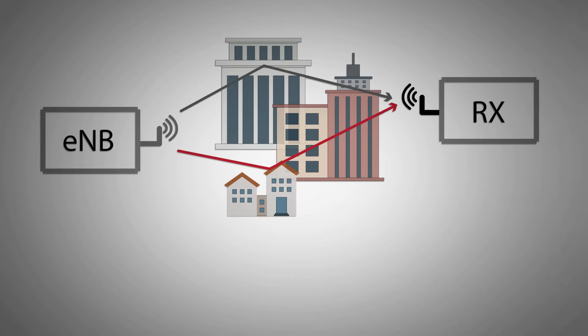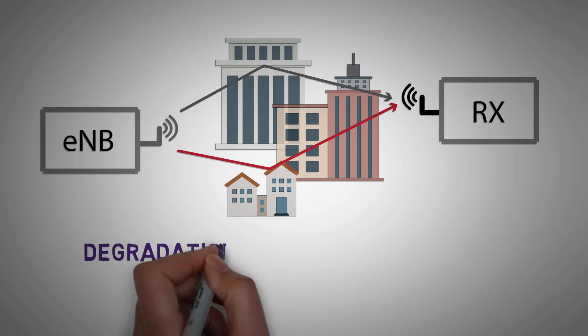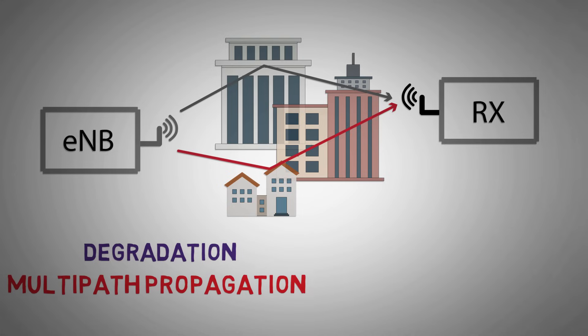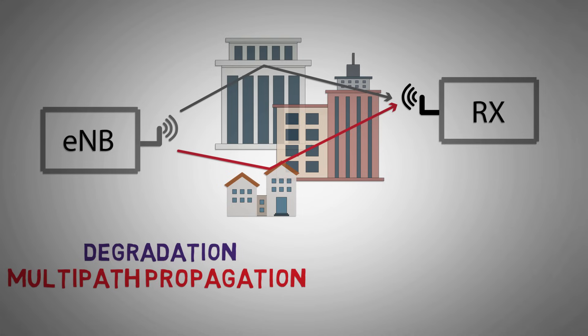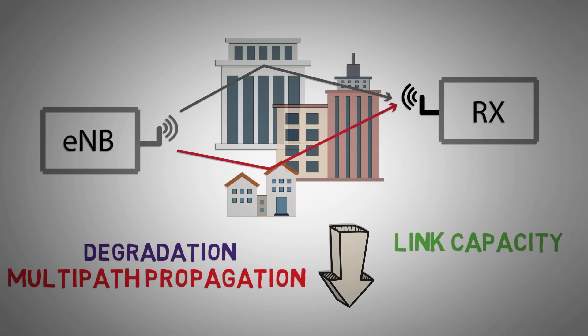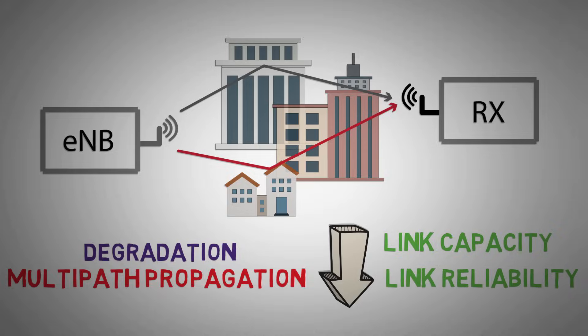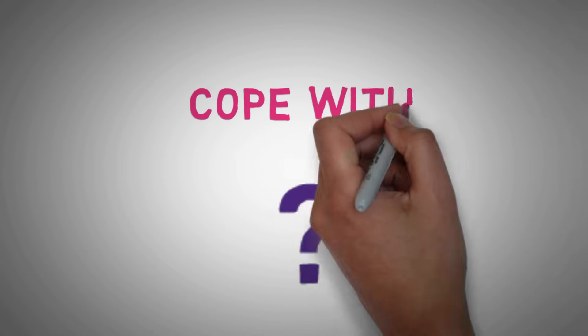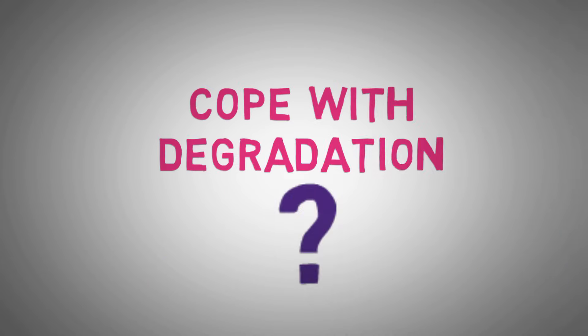Very often radio signals reaching the receiver face degradation due to multipath propagation, which reduces link capacity and link reliability. So how do we cope with these degradations?